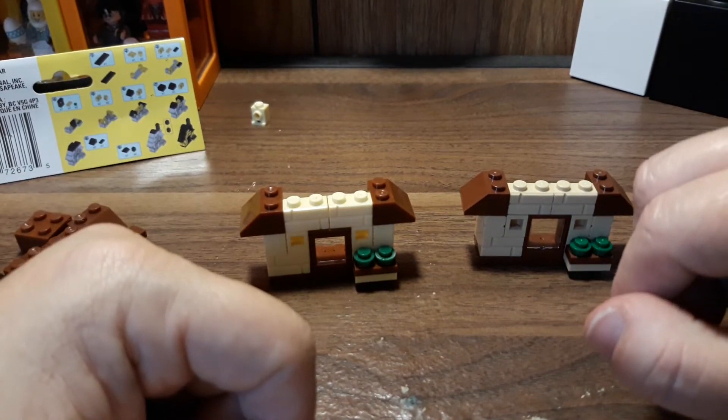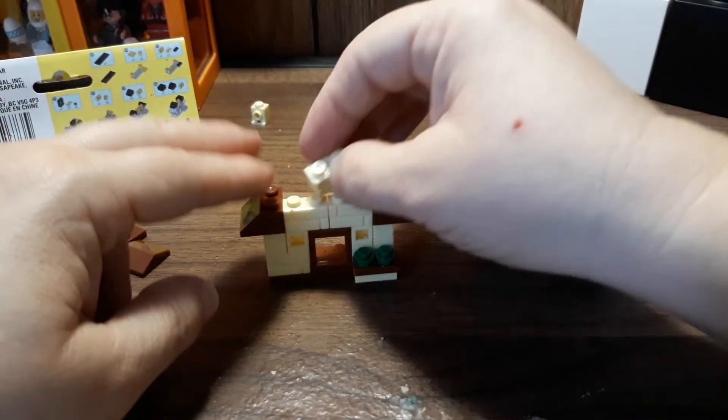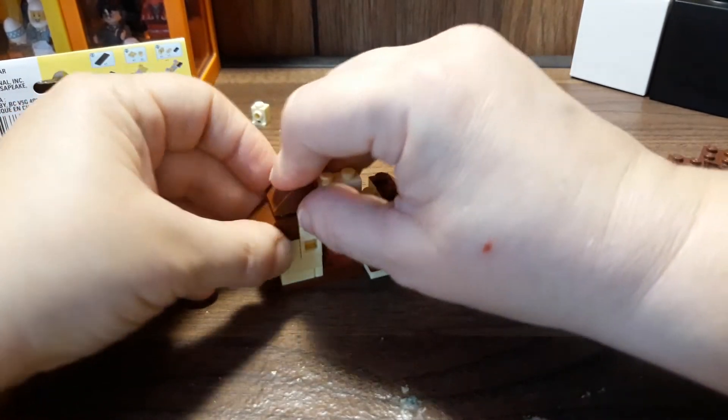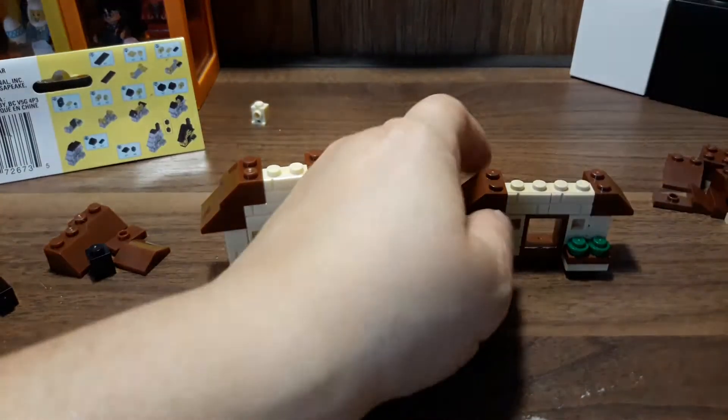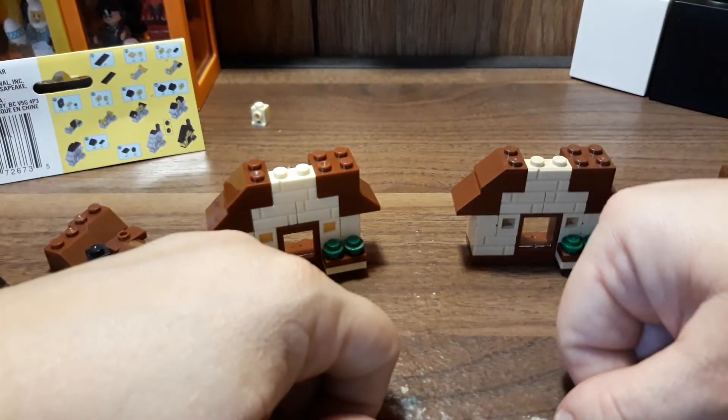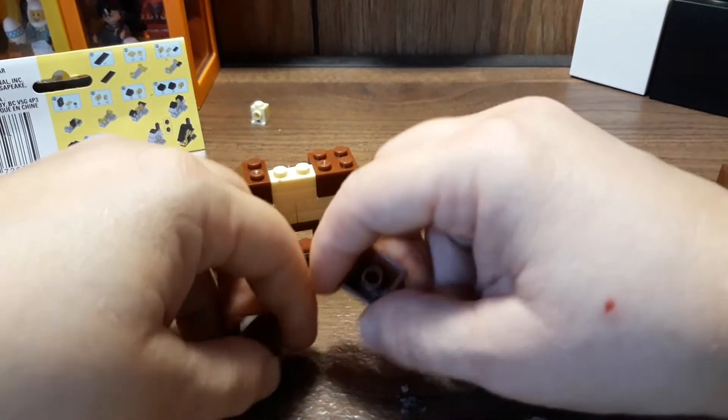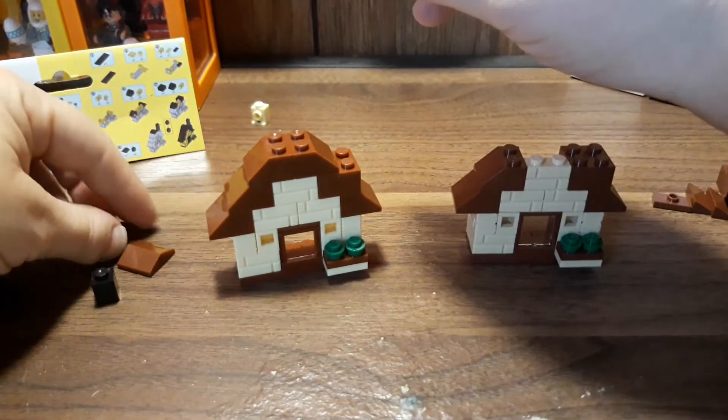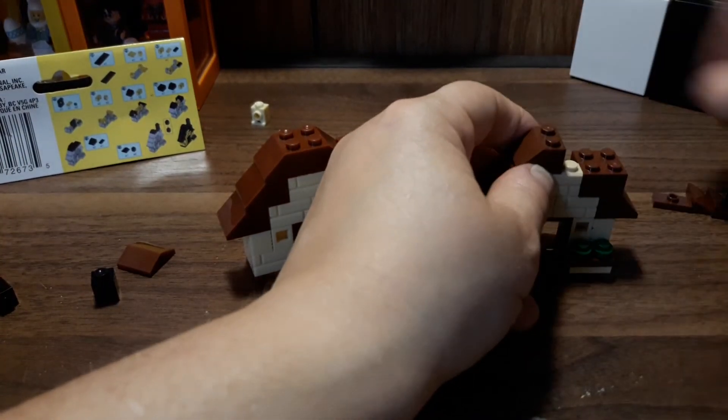Now step seven is another profile brick whatever in the middle with a two by two slope brick and the two by two brick. Let's put all those on this one as well. There we go. Now step eight is the two slope bricks with the one by two jumper plate. There we go.